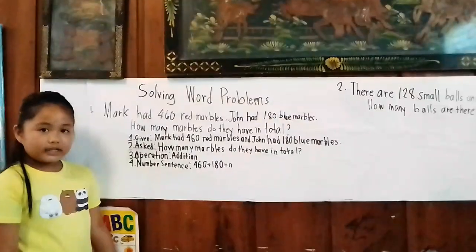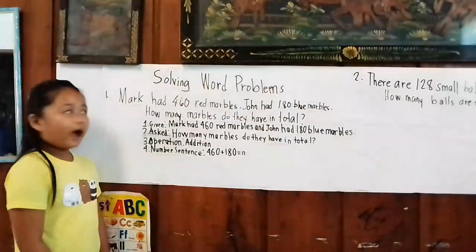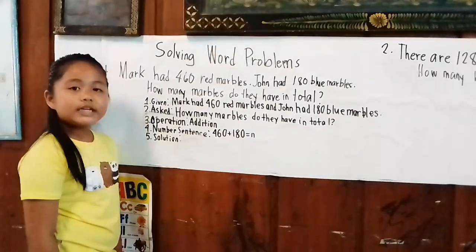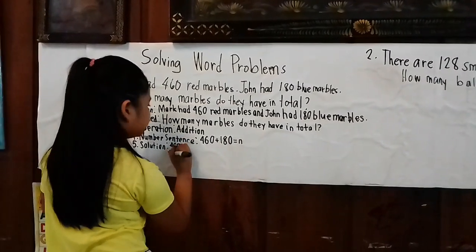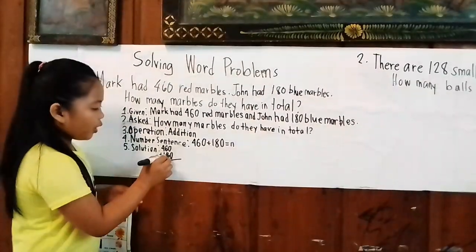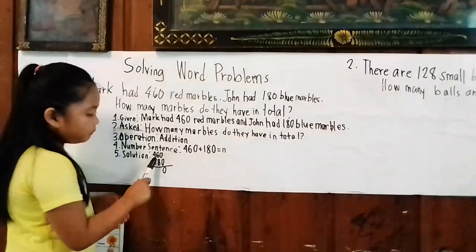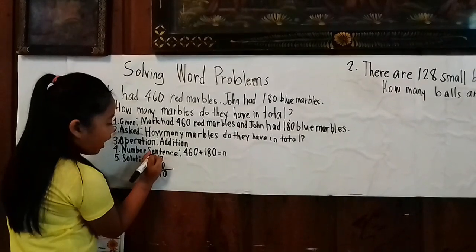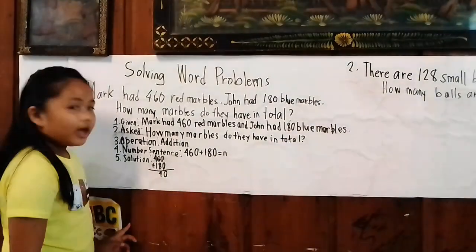What is step five in solving the word problem? Step five is 'Solution.' How to write the solution: 160 plus 180. Zero plus zero equals zero. Six plus eight equals 14. Then carry 1. One plus four equals five, plus one equals six.